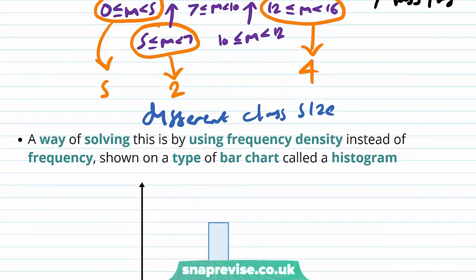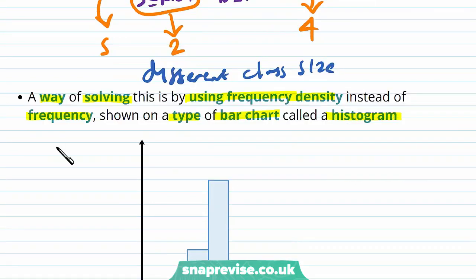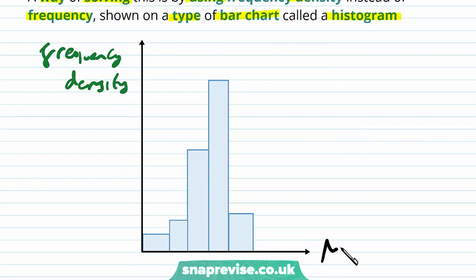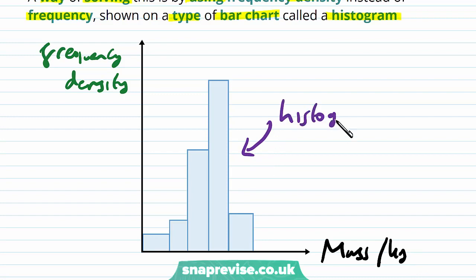A way of solving this is by using frequency density instead of frequency, shown on a type of bar chart called a histogram. Plotting frequency density against mass in kilograms produces a chart known as a histogram.